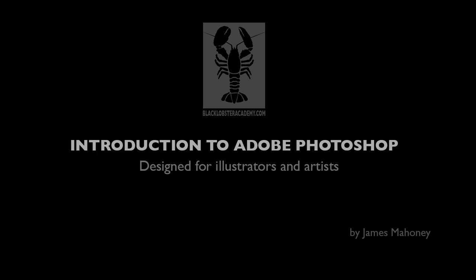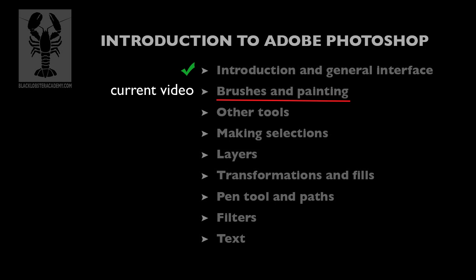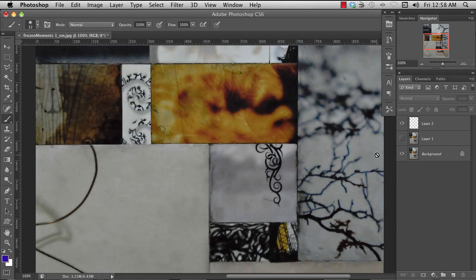Hi everybody, I'm James Mahoney of Black Lobster Academy. In the last segment we covered the very basics of the Photoshop UI and how to open a file, navigate the image, use guides and grids, and save a file. In this segment we're going to focus on brushes and painting. Photoshop is really powerful as a painting tool with a very deep feature set. I'm going to cover the most important and useful concepts while leaving some of the fancy stuff for a later, more advanced tutorial, but I'll give you what you need to know to get going.